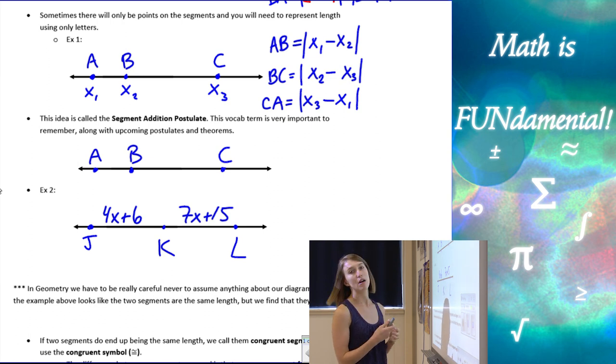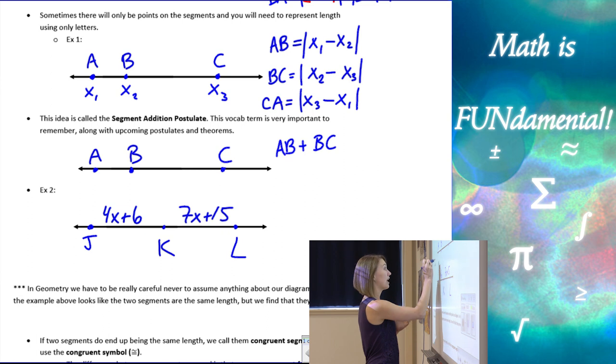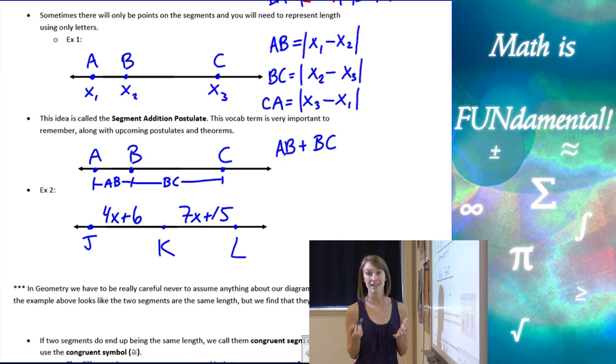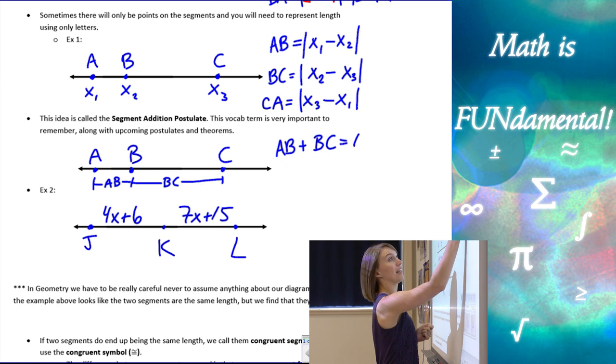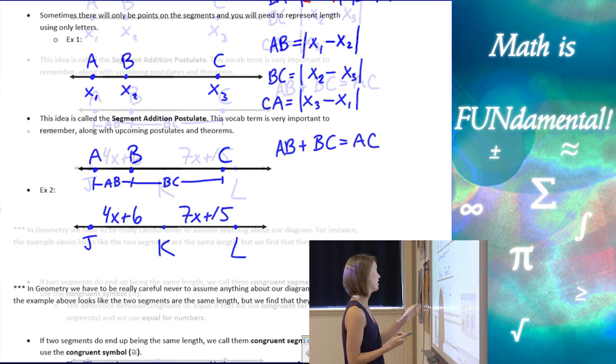So here, our segment addition postulate says that if I have these three parts of my segment, I have A, B, and C, all points on my segment, I know that if I take the length of A, B, and I add it to the length of B, C. Well, let's see what that does. If I have A, B is here, and then B, C goes from there to there, if I put those two things together, what am I going to get? Well, I'm going to get the length of A, C. And that's what we call the segment addition postulate.